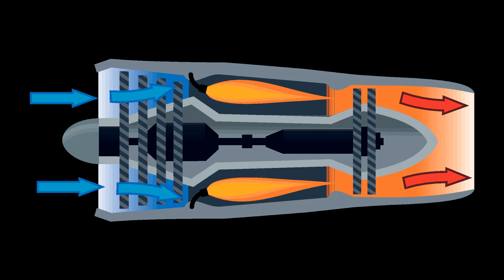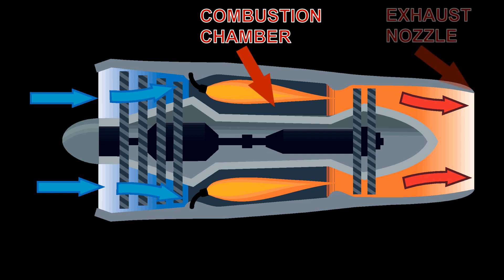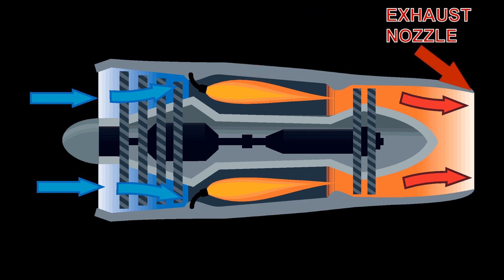So, to sum up, air is sucked in through the intake. The air is then squeezed by the compressors. The air is then ignited with the fuel in the combustion chamber. The air is then blown out of the back via the exhaust nozzle to produce thrust.